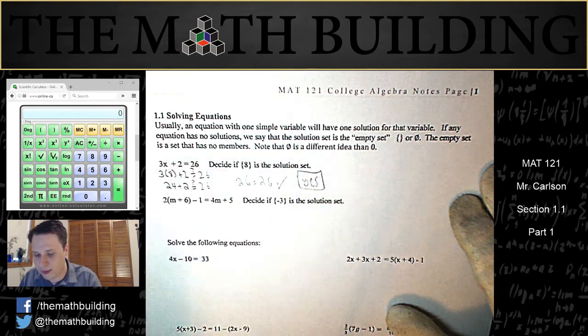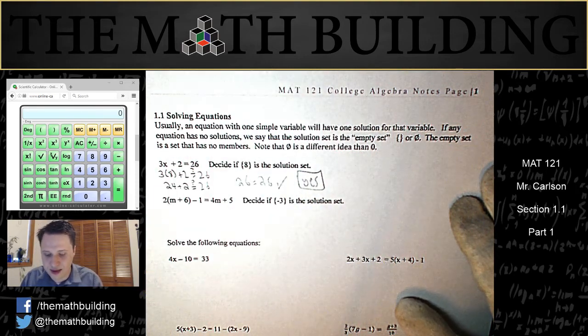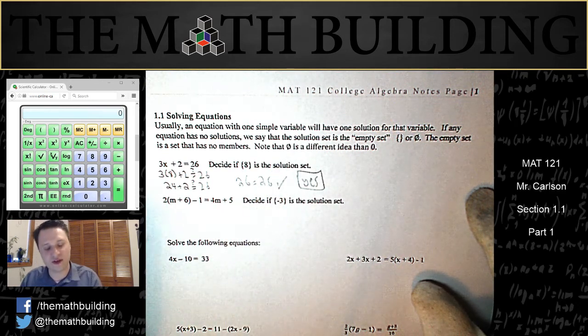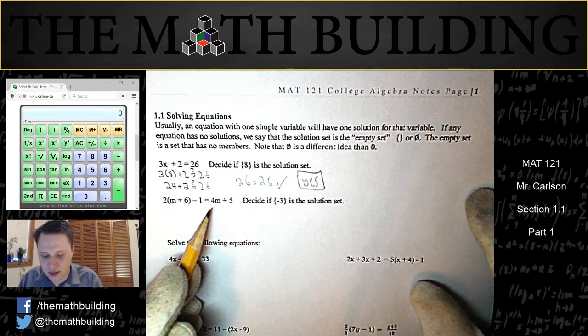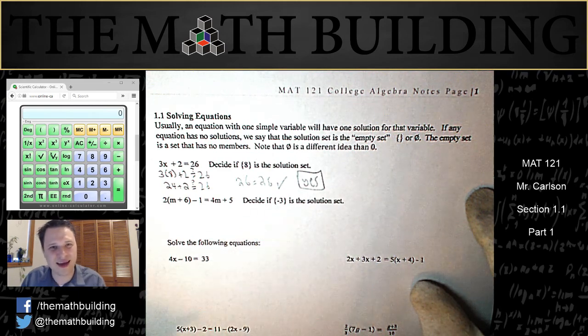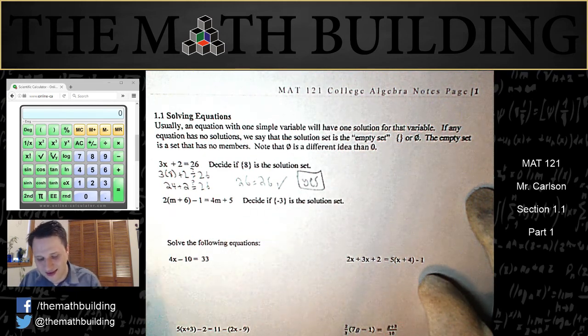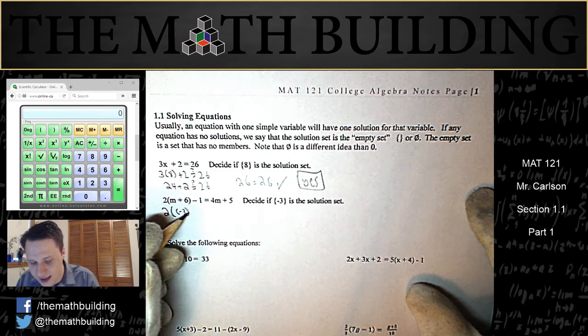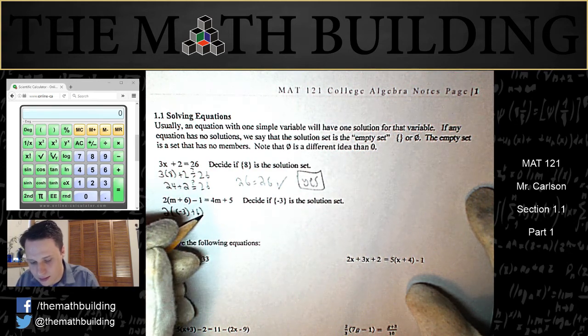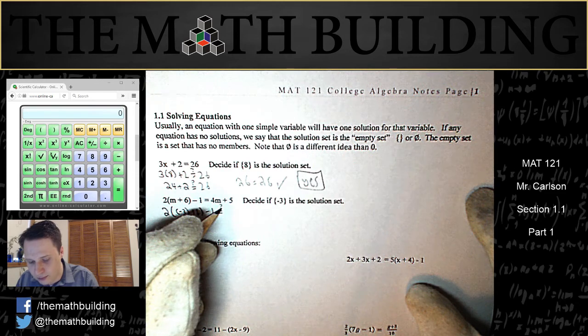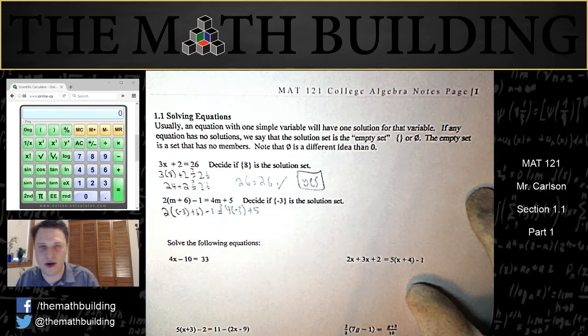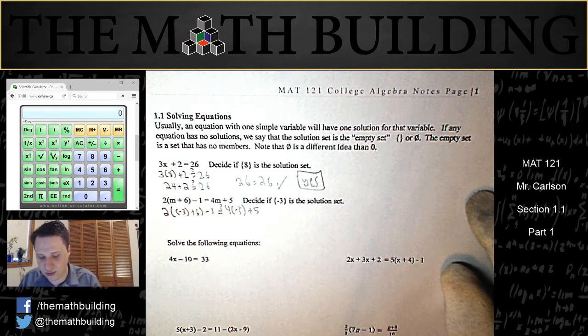The next one is 2m plus 6 minus 1 is equal to 4m plus 5. Decide if negative 3 is the solution set. So once again, we plug in negative 3 every time I see an m, like this, is maybe equal to the other side of the equation. Let's see if negative 3 is the solution set.